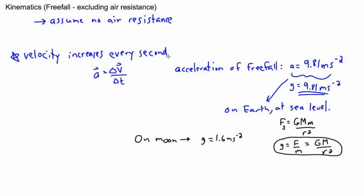But in these situations, and in a lot of high school physics examples, we're going to assume there's no air resistance. That means you assume your acceleration is constant, which means your velocity increases every second by the same amount.